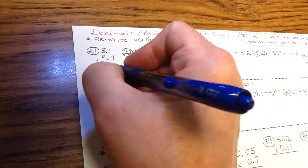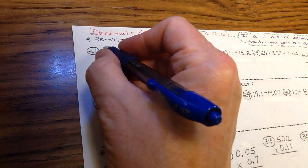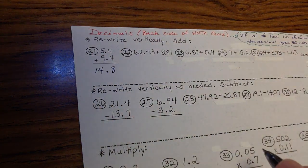So number 21 is already written vertically, so we can just go ahead and add. 4 plus 4 is 8. Bring your decimals straight down. 5 plus 9 is 14. And you get 14.8.